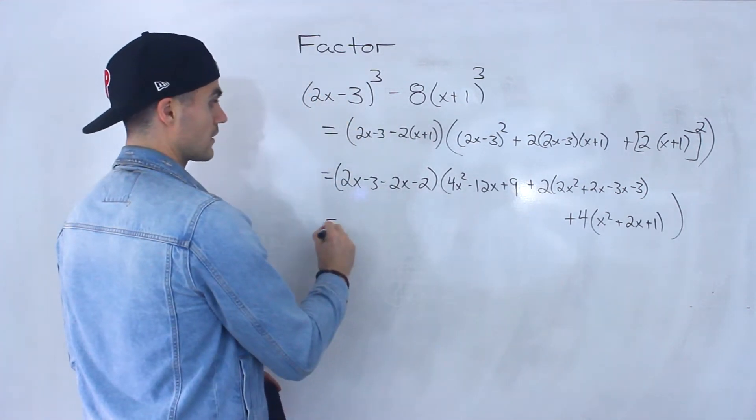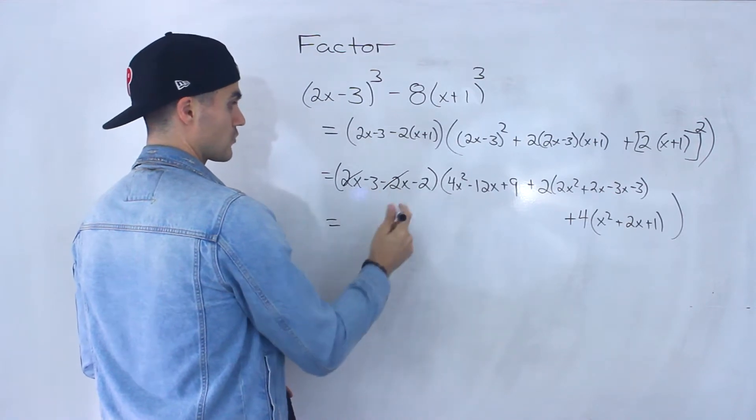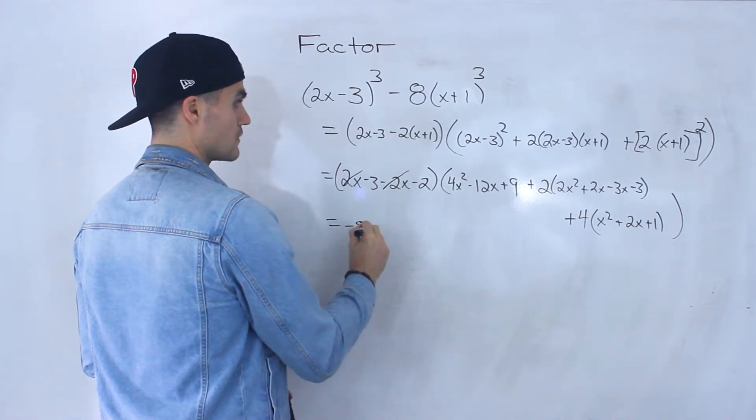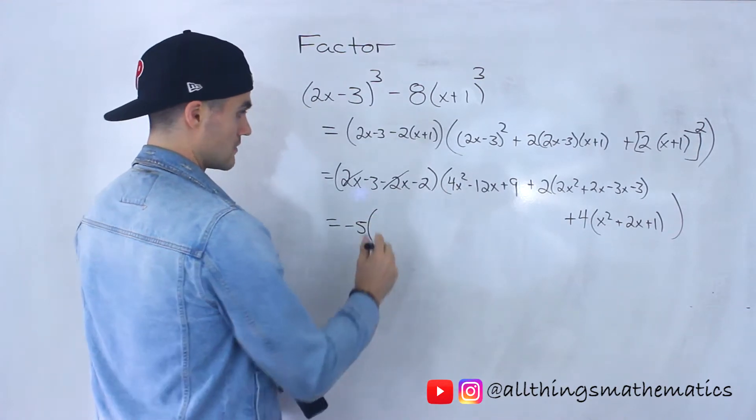Right? So lots of simplifying here. Notice here, the 2x's cancel out, which is nice. And then negative 3 minus 2, that gives us negative 5. So that's going to be on the outside.